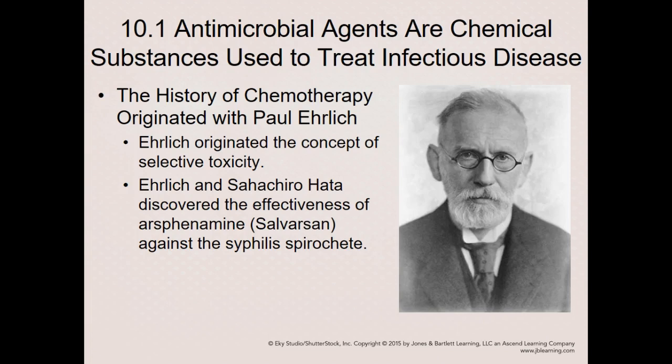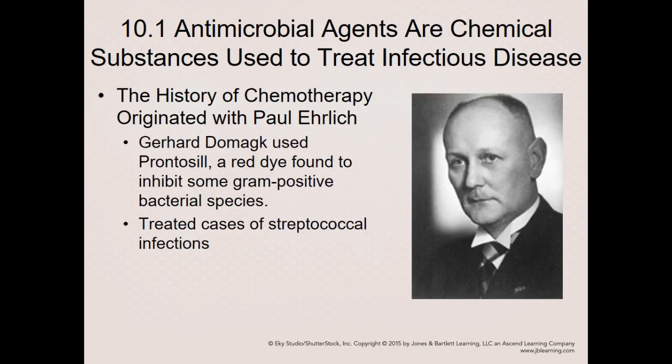A little while after Paul Ehrlich, Gerard Domagk discovered Prontosil. He was able to use Prontosil to treat streptococcal infections — think of strep throat or streptococcal meningitis. Prontosil was able to inhibit streptococcal bacteria, and then the immune system was able to fight off the infections. All of this occurred before we found a true antibiotic.